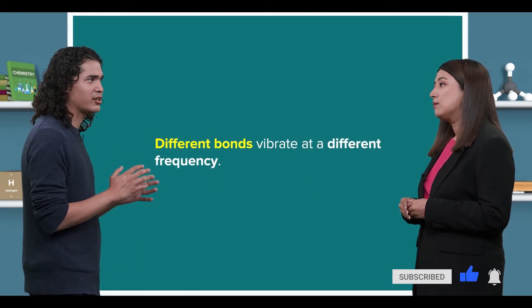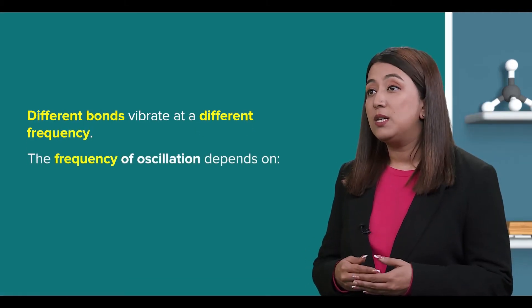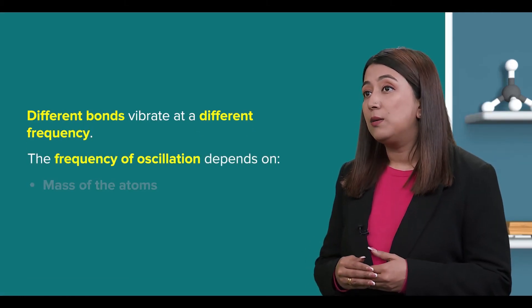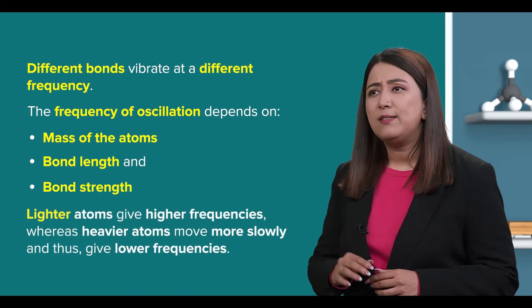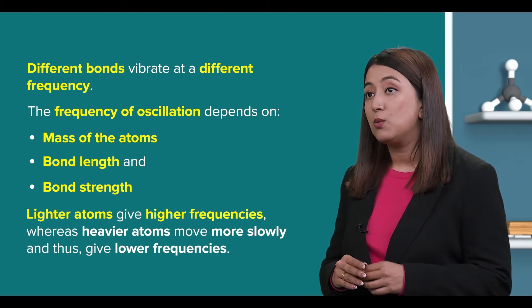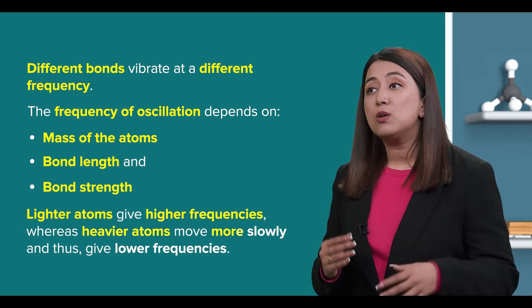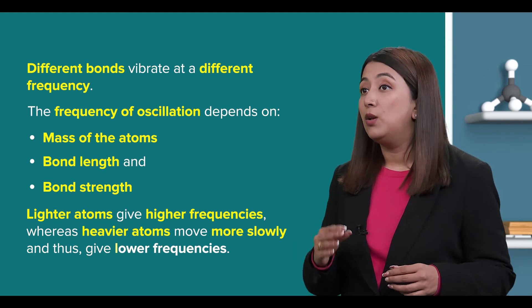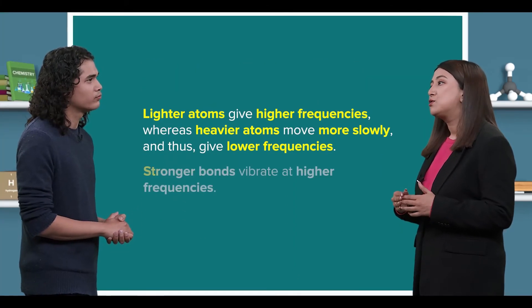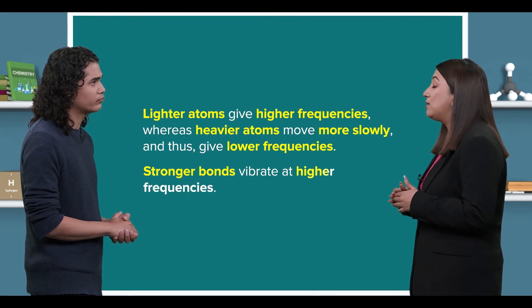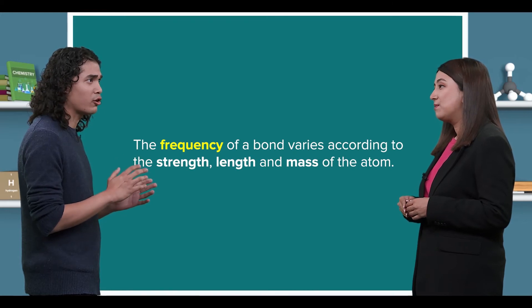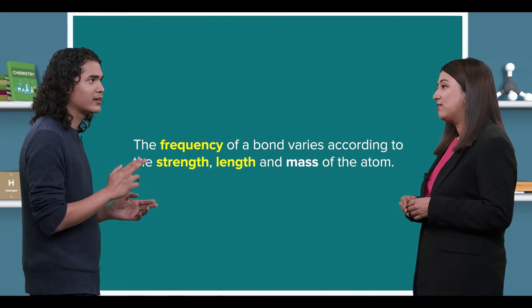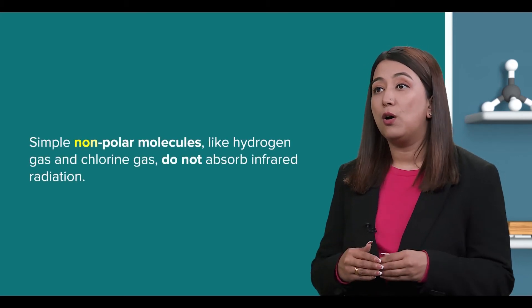Does that mean different bonds vibrate at a different frequency? Exactly. The frequency of oscillation depends on the masses of the atoms, bond length, and the strength of the bond. Lighter atoms give higher frequencies, whereas heavier atoms move more slowly and thus give lower frequencies. Similarly, stronger bonds vibrate at a higher frequency. Got it. The frequency of a bond varies according to its strength, length, and mass of the atoms. You got that right.